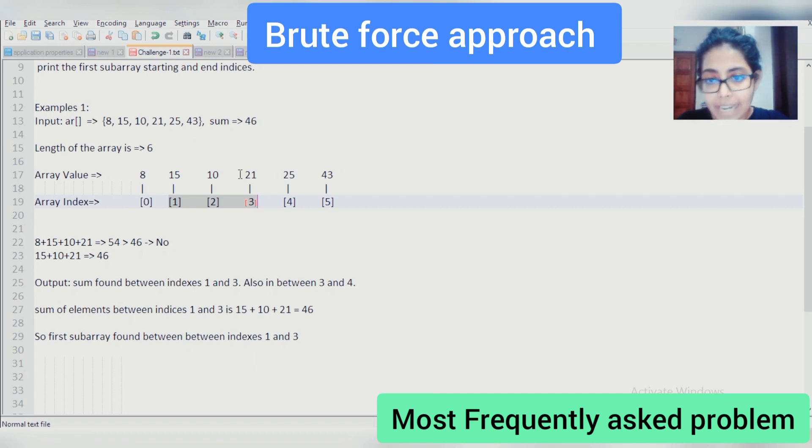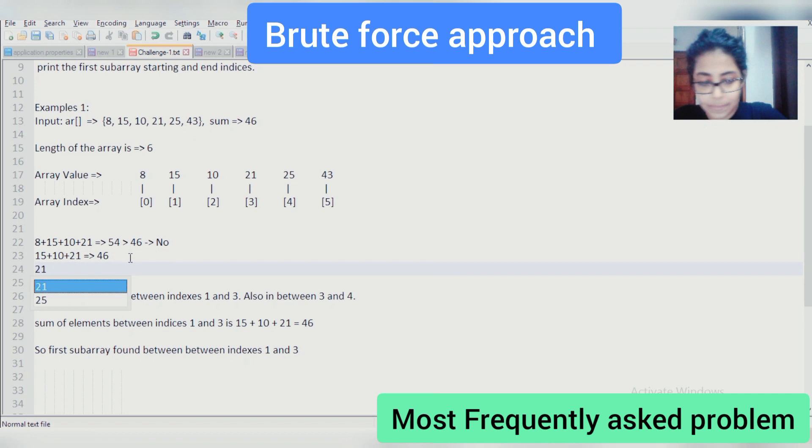If we look at it, you will get that by adding 21 and 25 also, we can get 46. But, as I have already mentioned previously, that we need to concentrate or rather we need to get that first subarray which gives us our required output. Both are giving us the required output, but this is the first subarray. So in our case, the answer would be that the first subarray found between indexes 1 and 3.